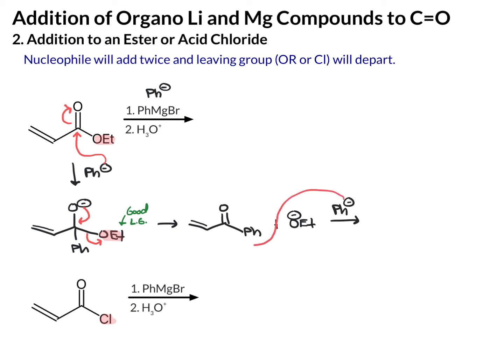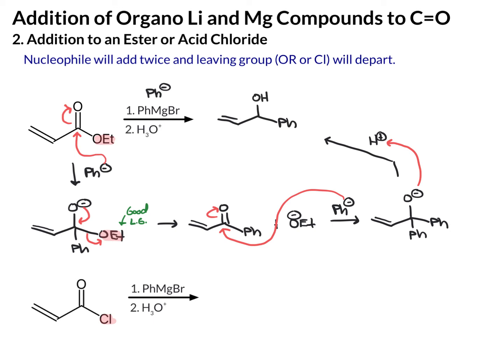Here's our second addition of the nucleophile. Now we're stuck at the tetrahedral intermediate with the O minus — there's no leaving group. So now we can do the protonation step and add the acid.